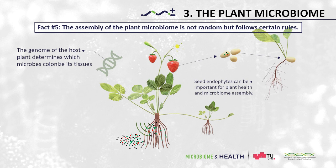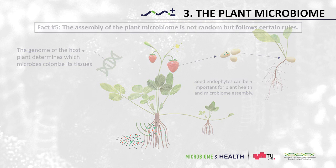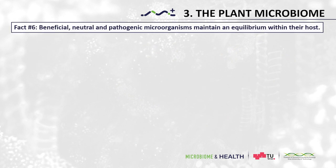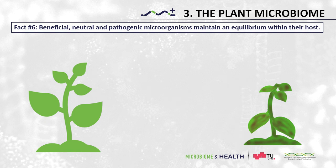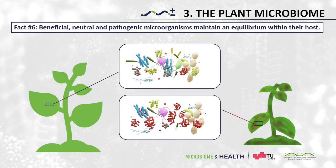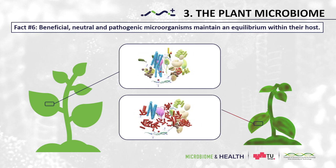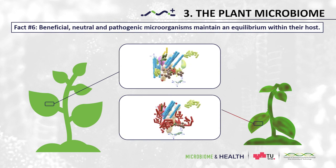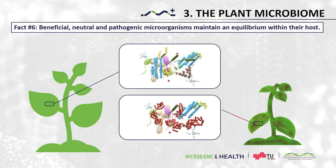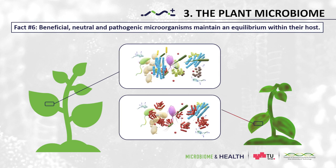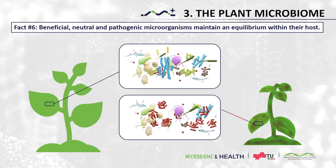Thereby, seed endophytes are expected to strongly influence microbiome assembly already at this early stage. Fact number six: beneficial, neutral and pathogenic microorganisms maintain an equilibrium within their host. Health and disease of a plant are dependent on the whole microbial community, meaning different microorganisms with different functions interact with each other and modulate the community's diversity and abundance. The presence and absence of plant pathogens play a huge role within this complex system.